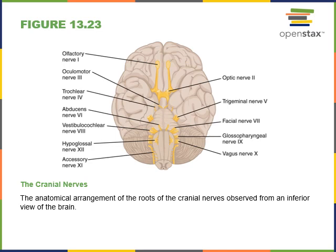Cranial nerve number five is the trigeminal nerve. It has three large branches — ophthalmic, maxillary, and mandibular — and carries both sensory and motor impulses. Sensory information comes from the face, and the motor commands excite the muscles of mastication, the muscles required to chew. For example, the masseter and the temporalis are muscles excited by the trigeminal nerve.